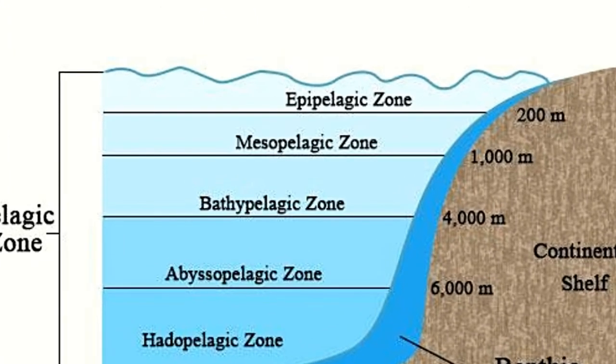Because of the lack of light, benthos cannot produce their own food, and hence, for nourishment, they have to rely on the organic matter that drifts down from the layers of water above the benthic zone.